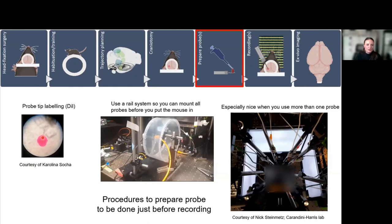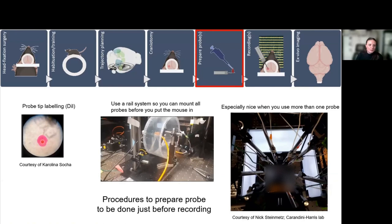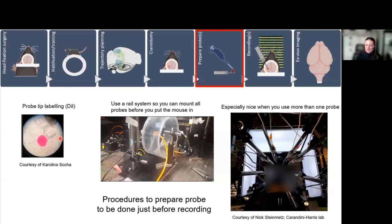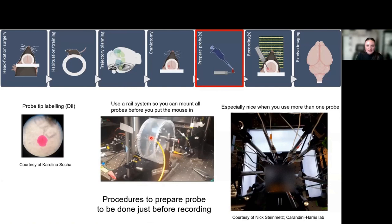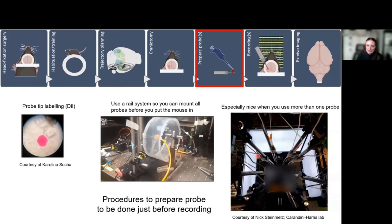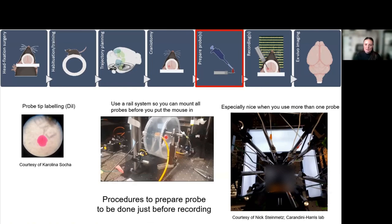Just before every recording, you want to do a few steps. First, you want to label your probe tips with some fluorescent dye. This way you can find the probe tracks back in the brain later during histology. You can either just dip the probe tip carefully in the dye, preferably not by hand but with some tool. You can also use pipettes to carefully leave some dye on the tip. I really like to have a rail system in place because it means you can prepare all your Neuropixels probes—this is an extreme situation by Nick Steinmetz, I only use two. But even then, it's nice if you have the two you're going to record with hanging there before you put the mouse in the rig. This way, you can basically slide the mouse under the recording probes when you're ready to go.